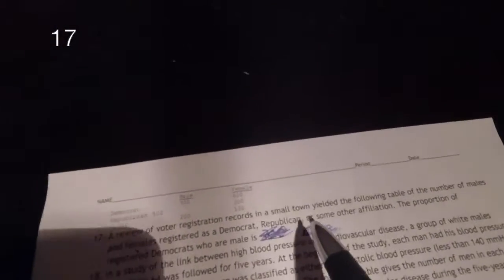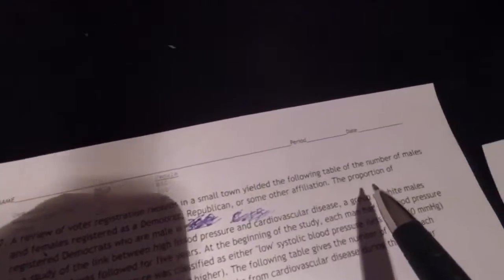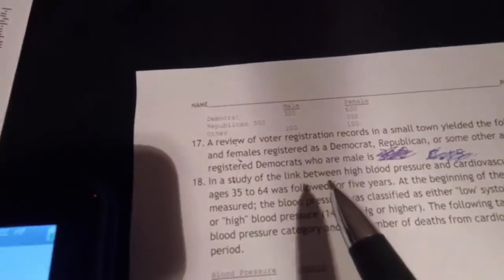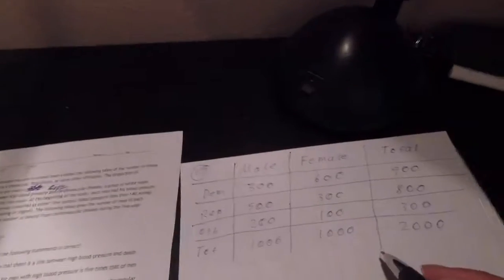A review of voter registration records in a small town yielded the following table of number of males and females registered as Democrat, Republican, or some other affiliation. The proportion of registered Democrats who are male is blank. So on our two-way table,